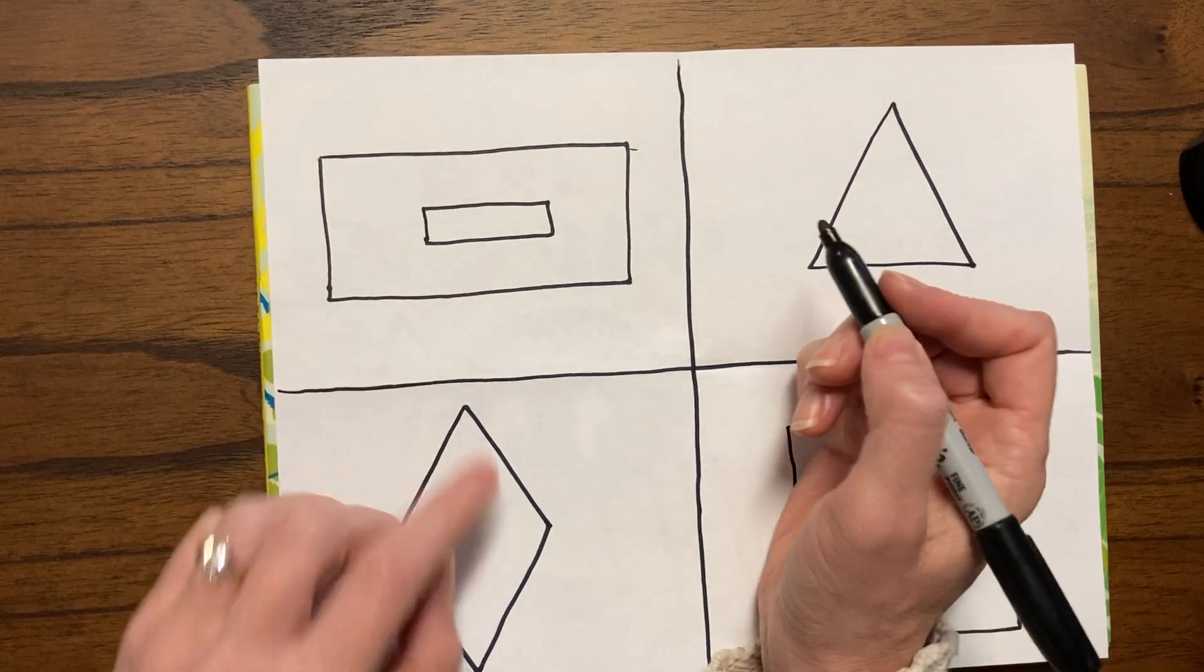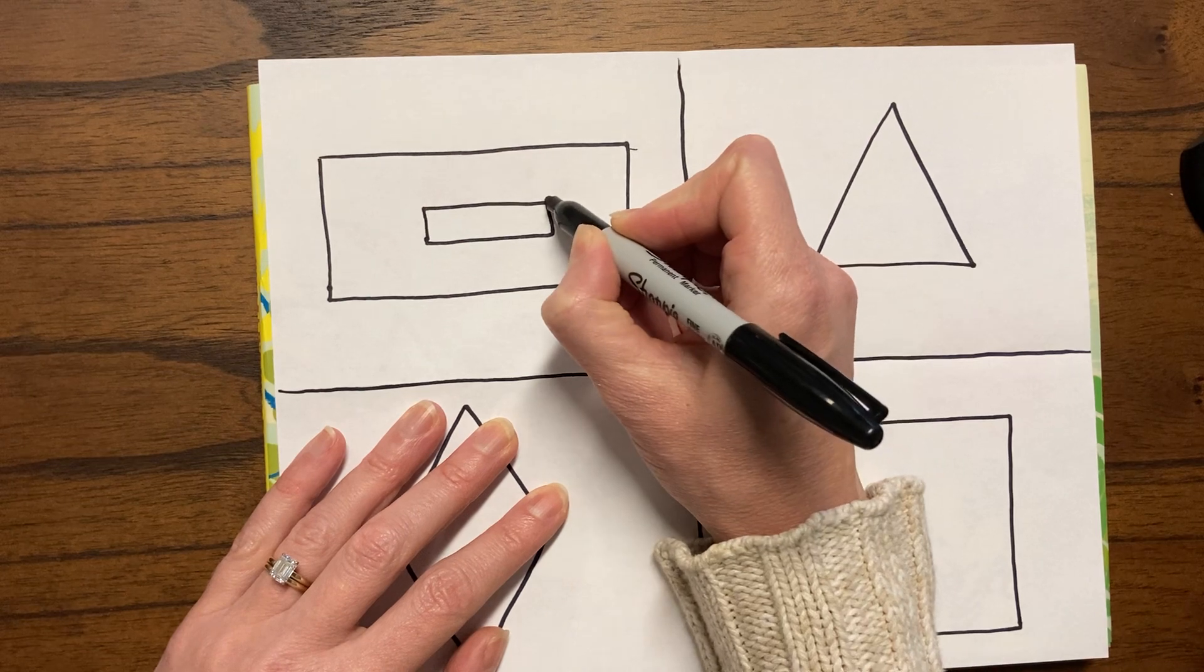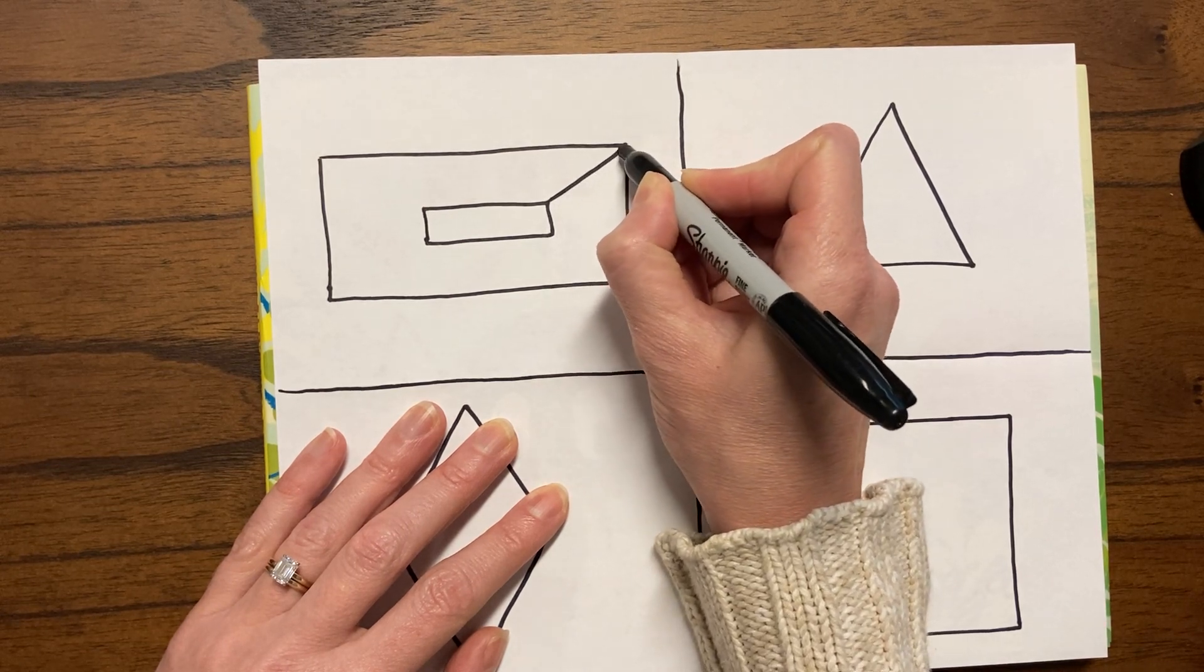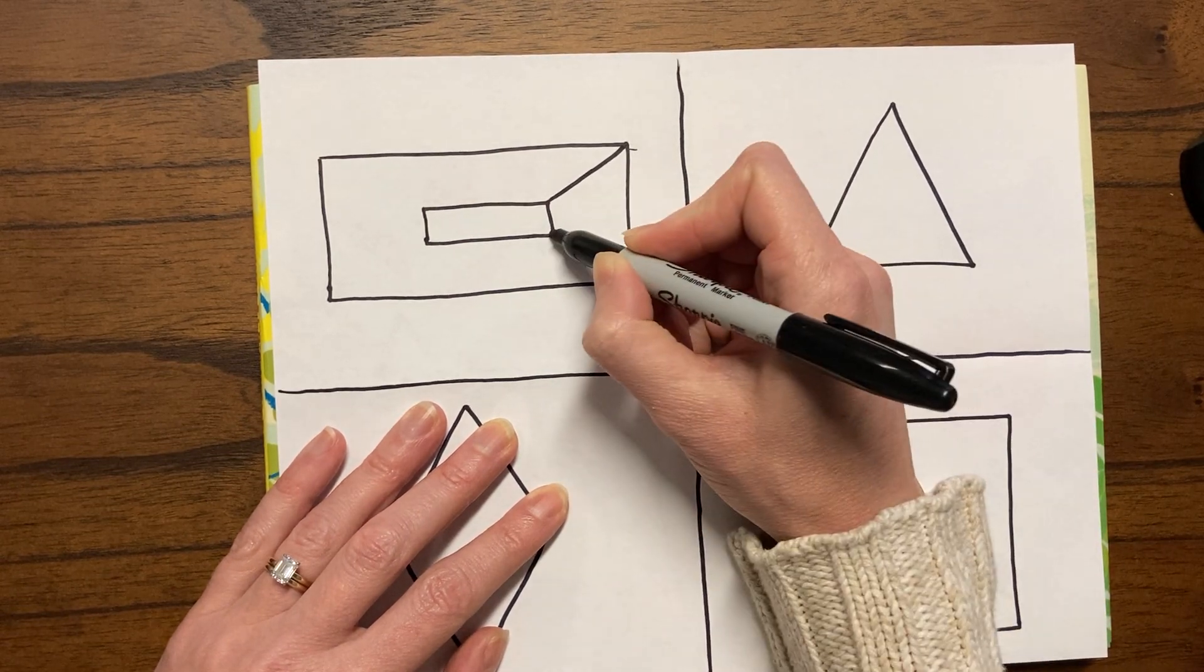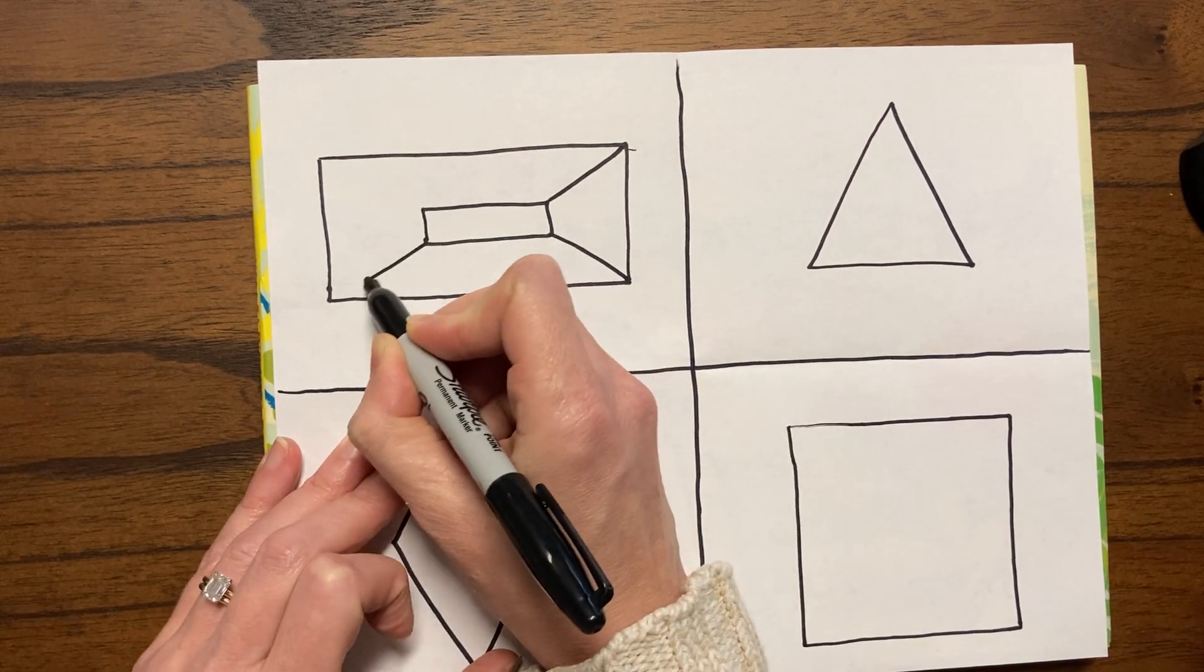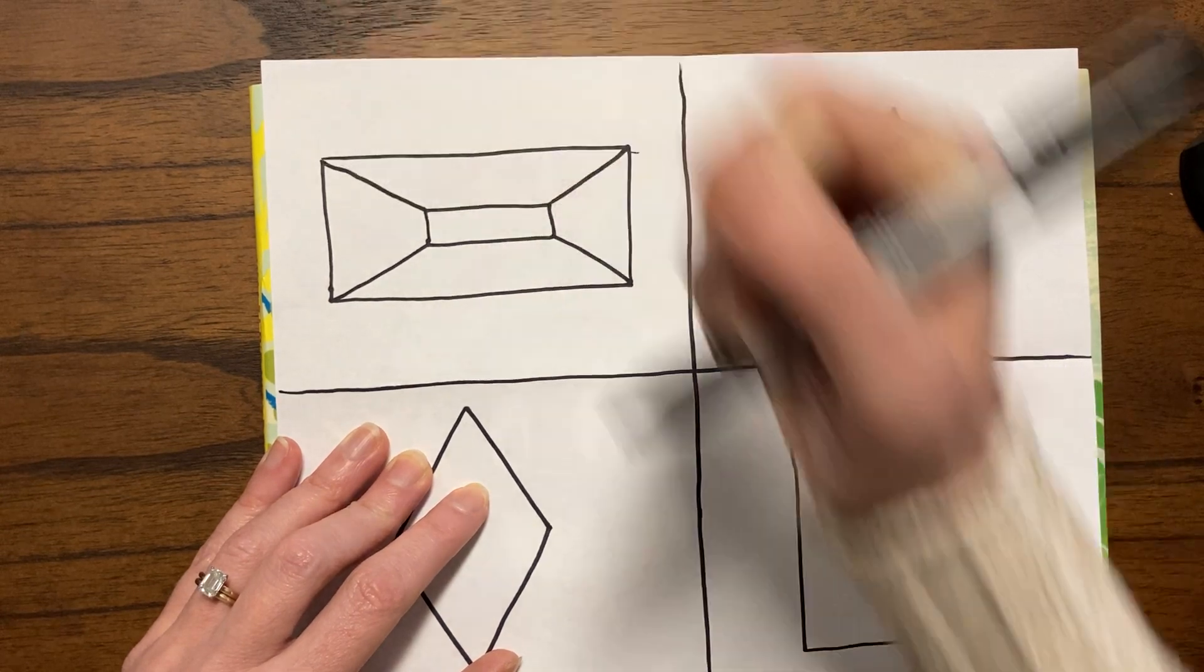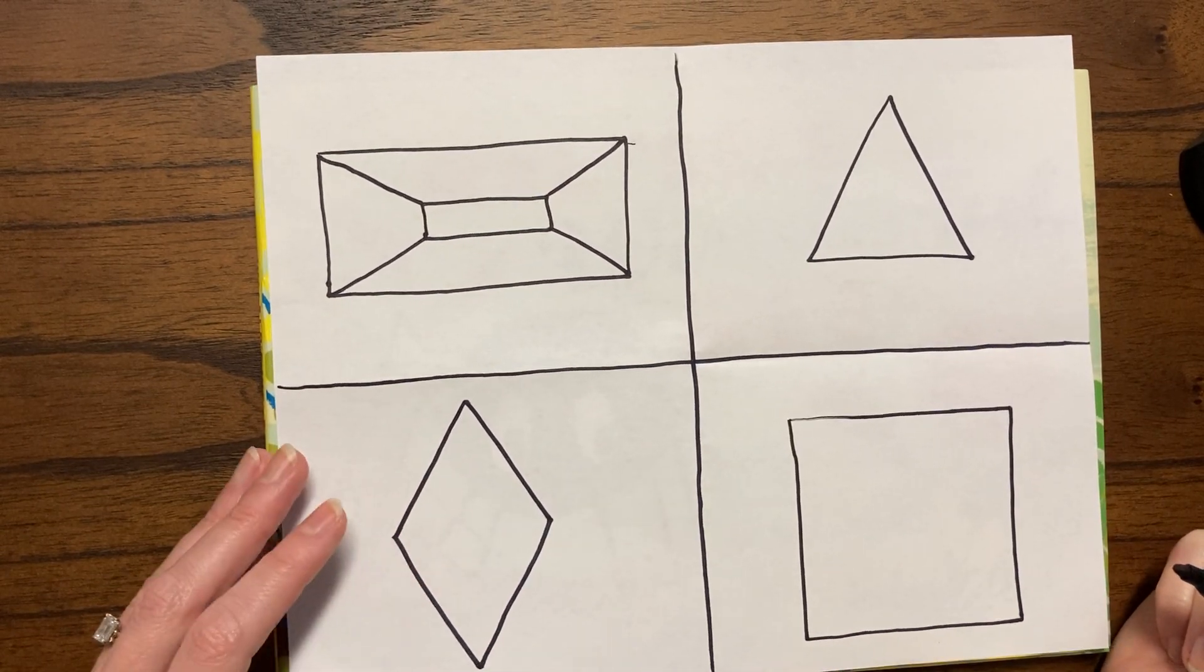Now to turn this into a spider web, what we're going to do is connect corners. So I'm going to connect this corner out. I'm going to connect this corner out. I'm going to connect this corner out. And I'm going to connect this corner out. So you do the same thing. Hope you're following along.